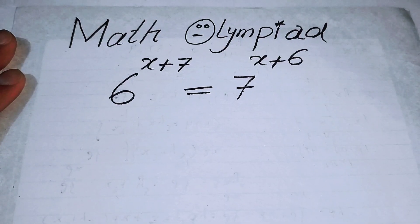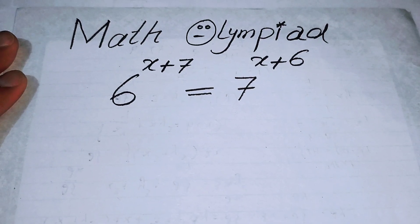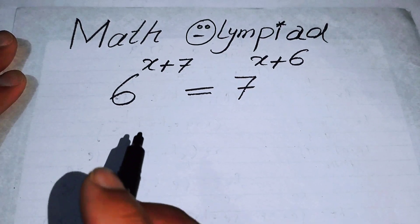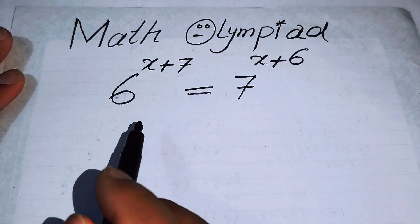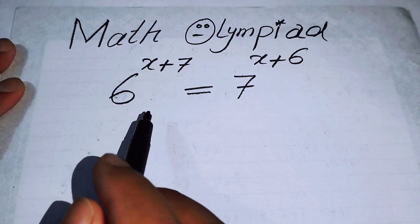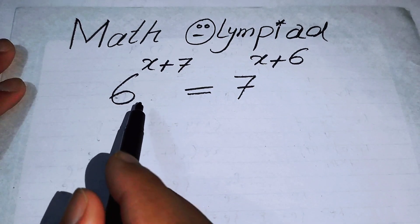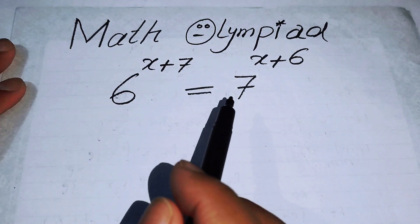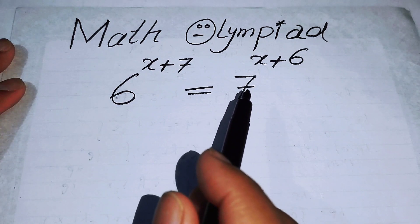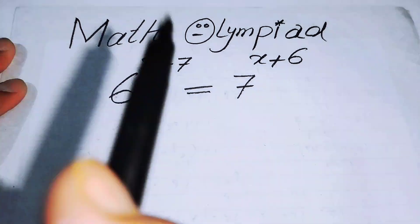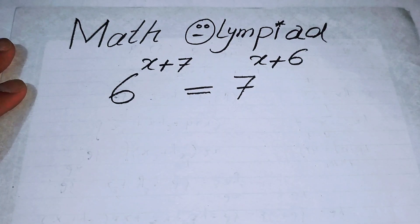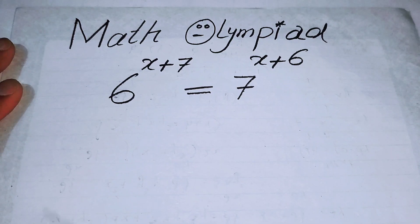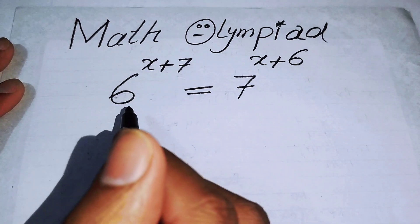Hello everyone, welcome back to the Map of Mathematics. In this video we are going to solve a nice exponential problem: 6 to the power of x plus 7 is equal to 7 to the power of x plus 6, and we will solve this problem for the value of x.